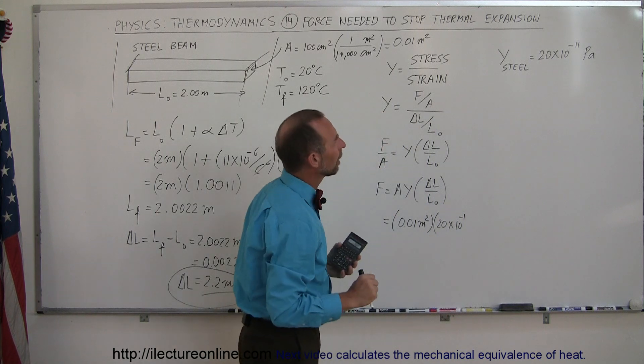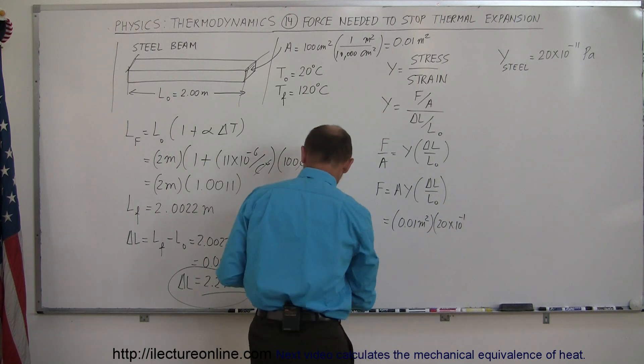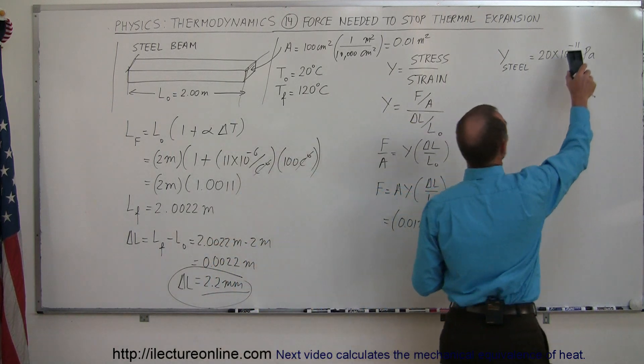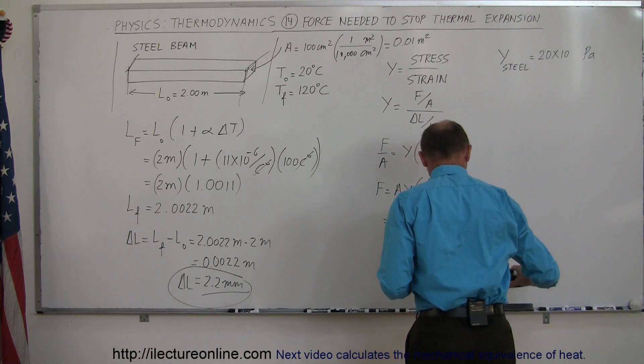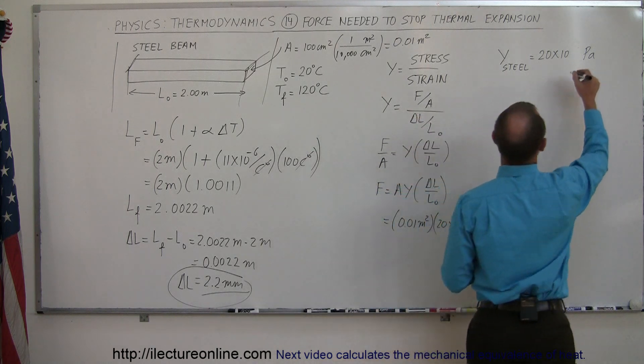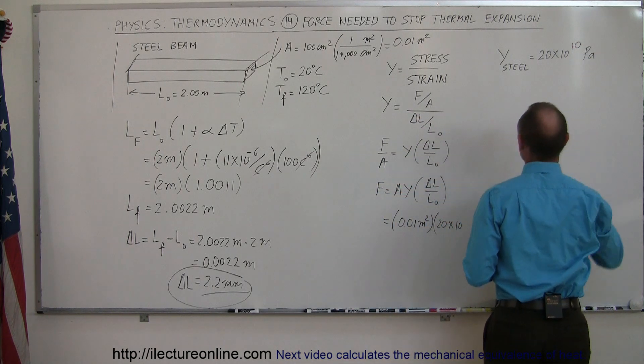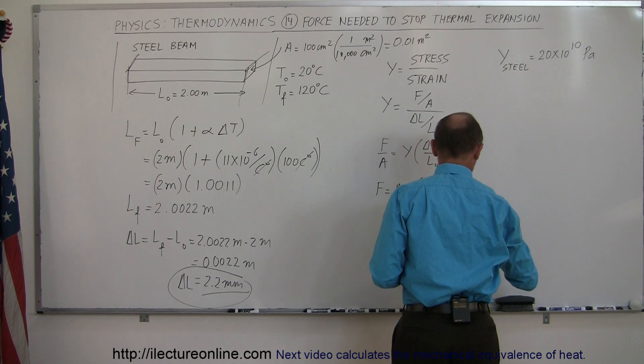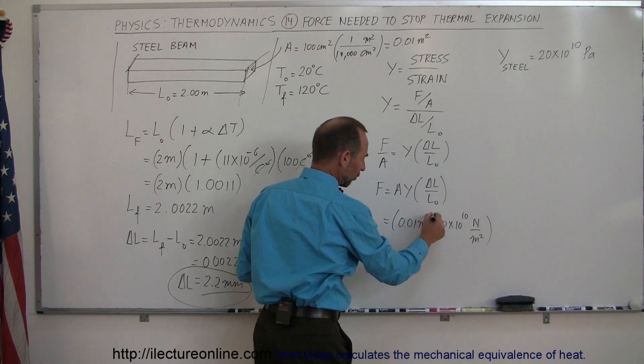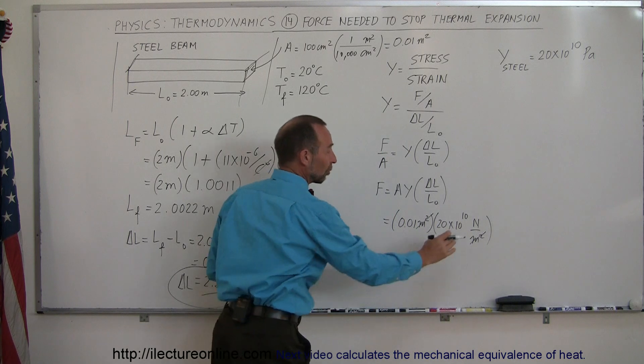Oh, not minus 10, what am I doing here? This was supposed to be 10 to the 10th. I'm thinking about the coefficient of linear expansion. So that's 10 to the 10th pascals, which is newtons per square meter. Notice that the square meters will cancel out, and we'll end up with newtons.